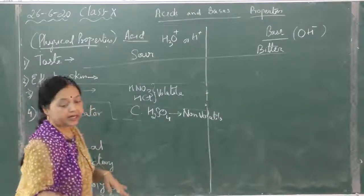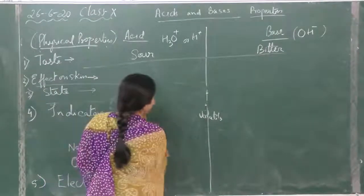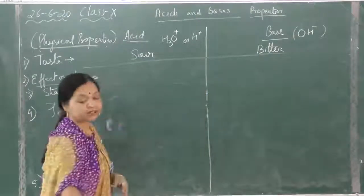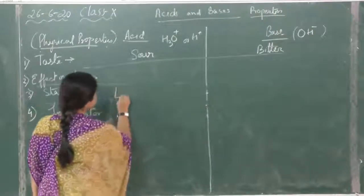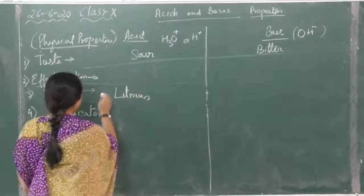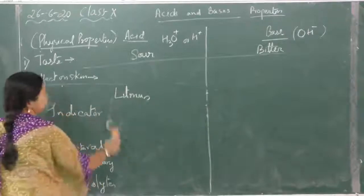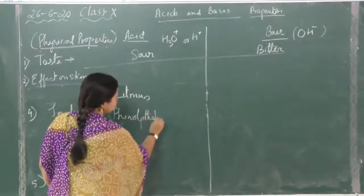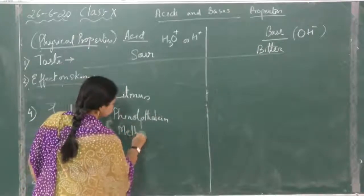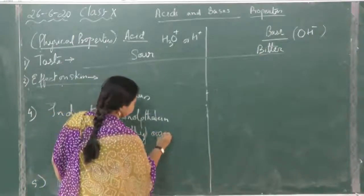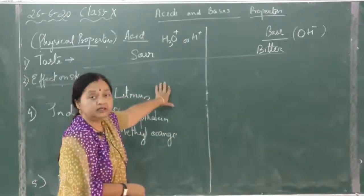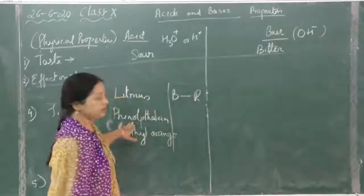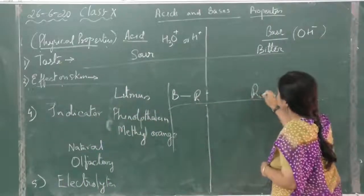Now we move to the indicators. Indicators, the three common indicators: litmus, phenolphthalein, and methyl orange. We will see what is the effect. Litmus, acids will turn blue litmus red, so blue to red for acids. For bases, this is red to blue.